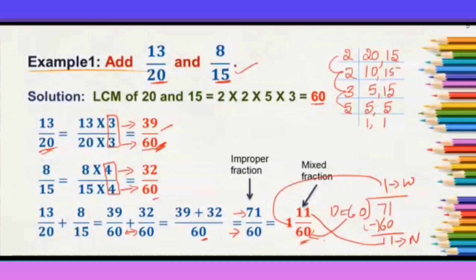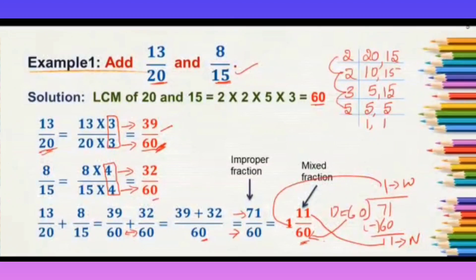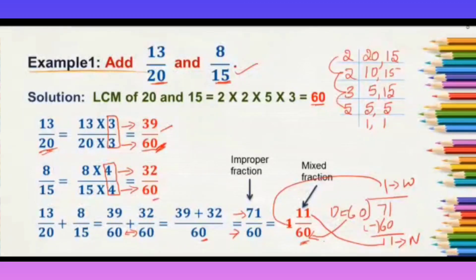This is how we add given fractions when they are unlike. When you have to add unlike fractions: first, find the LCM of the given denominators. Second, convert the given fractions into like fractions. Third, add the numerators, keeping the denominator the same.